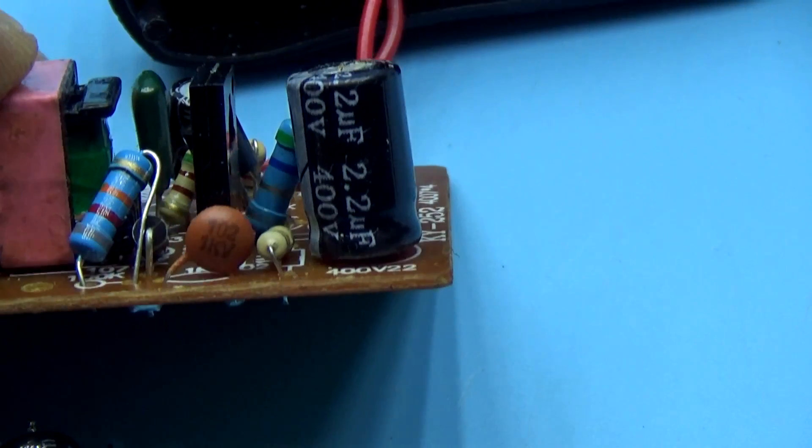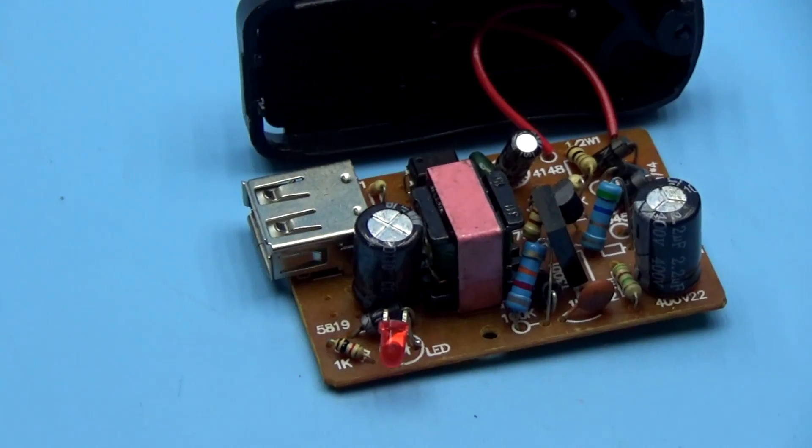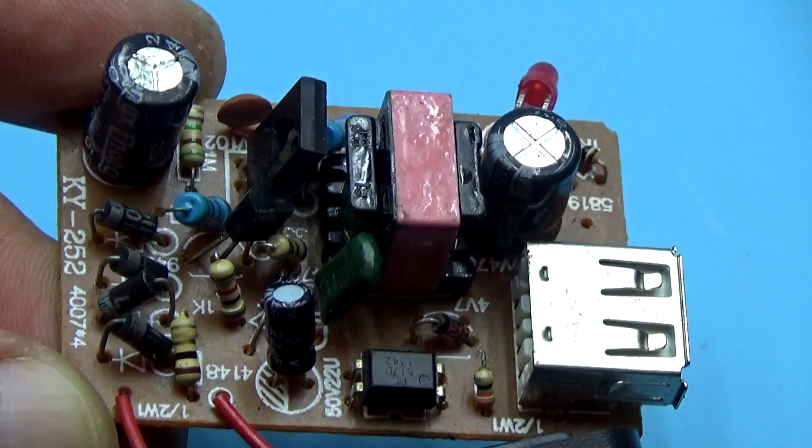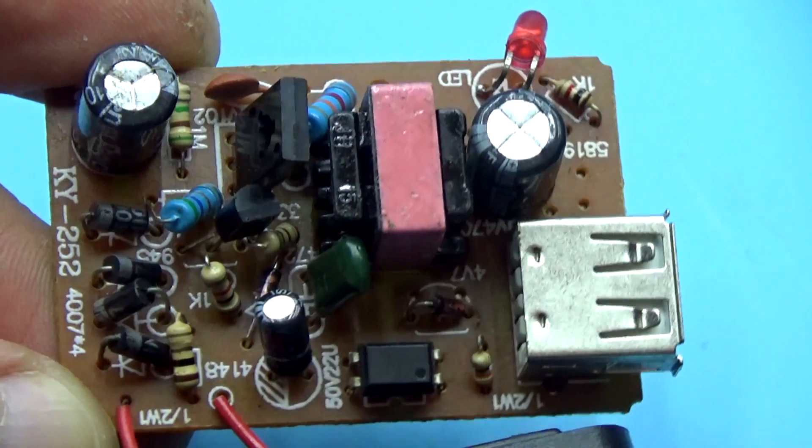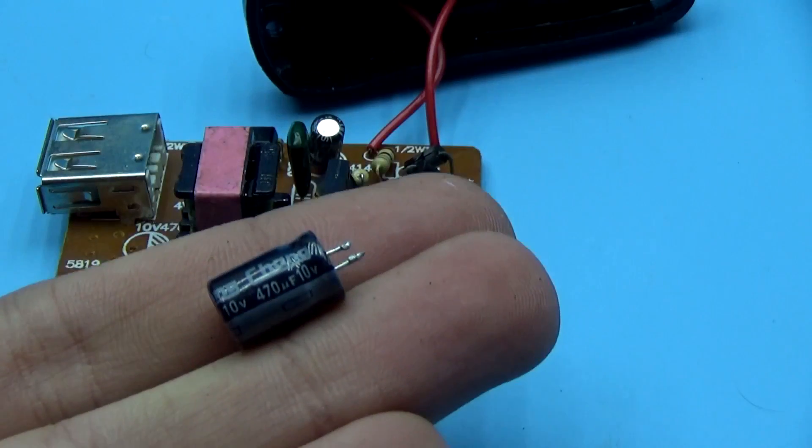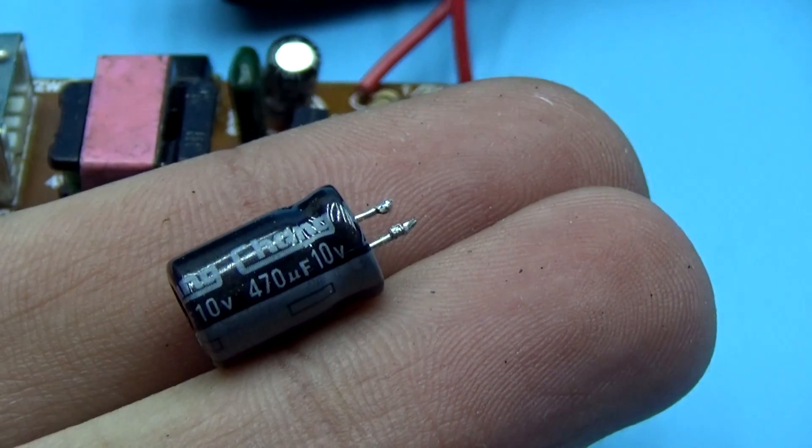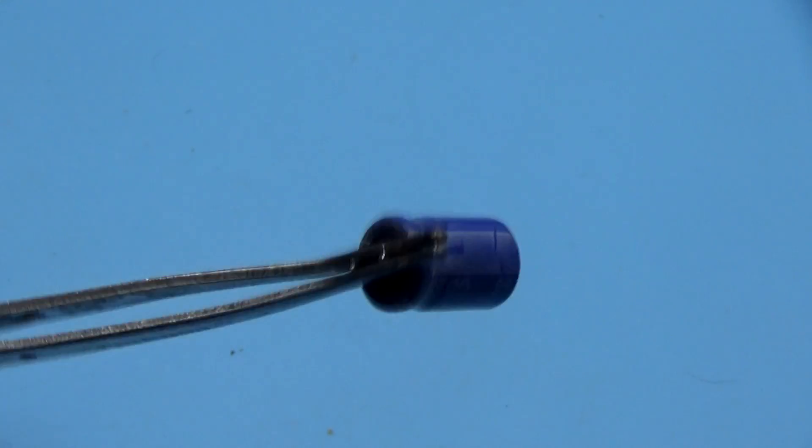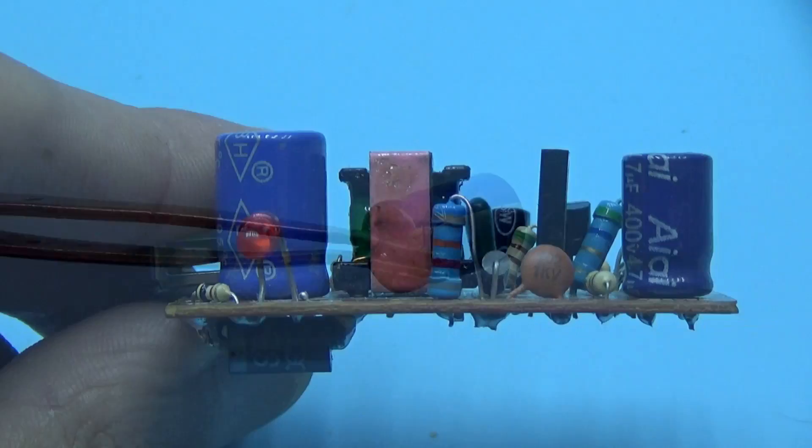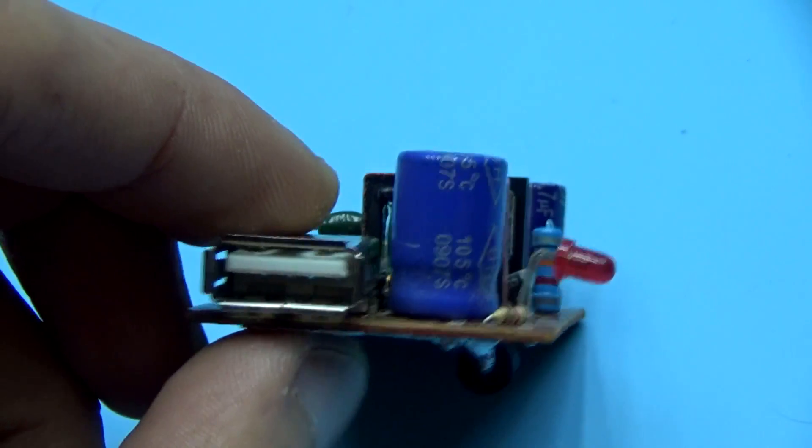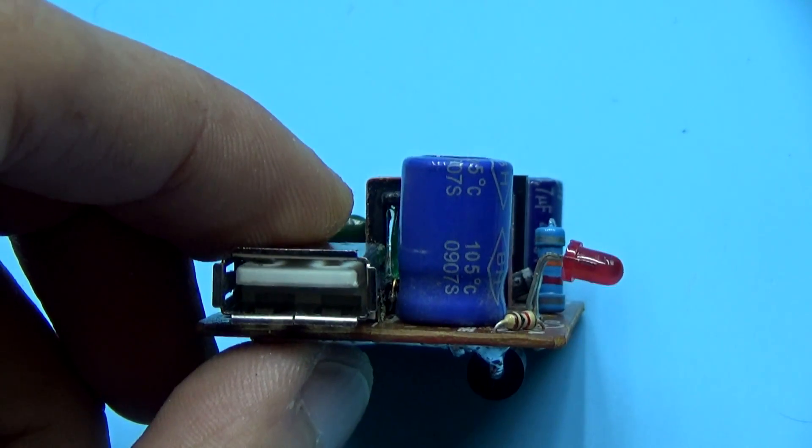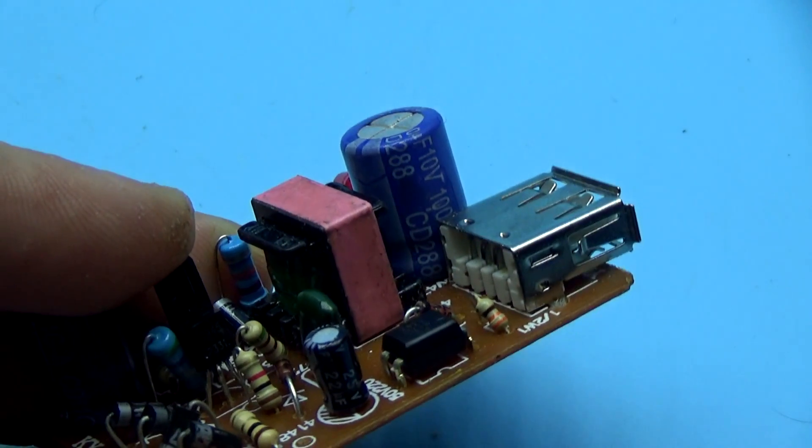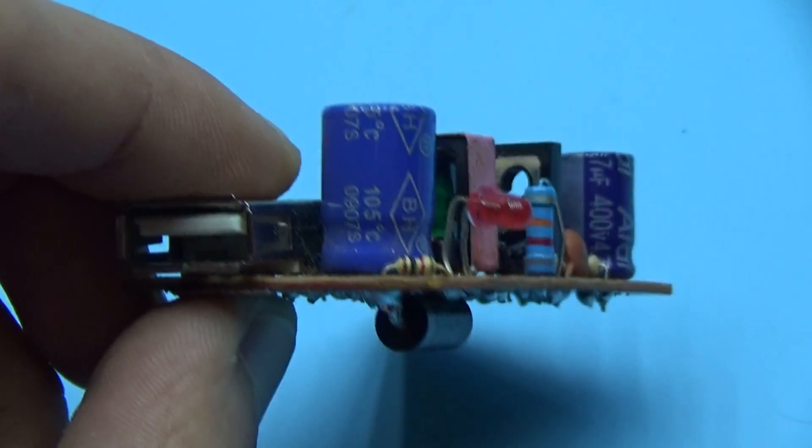Next, unsolder the input and output capacitors. Both are electrolytic. The output is 10V, 470µF. The input is high voltage, 400V, 2.2µF. It is desirable to put low ESR output capacitor, that is, with low internal resistance. You can get such from computer power supplies. I found one with a value of 1000µF. In principle, 470µF is enough. I put it, but then I will remove it, because it prevents installing the board in the native case.